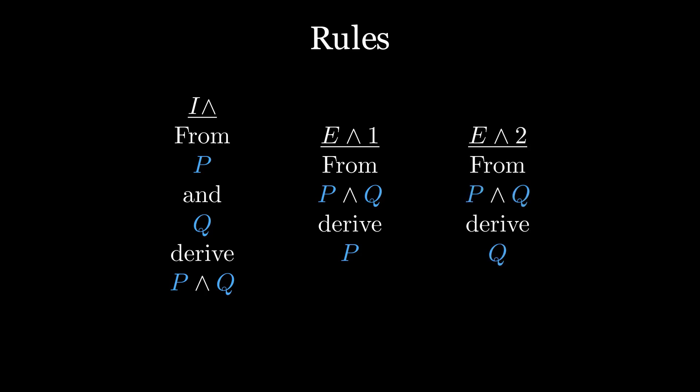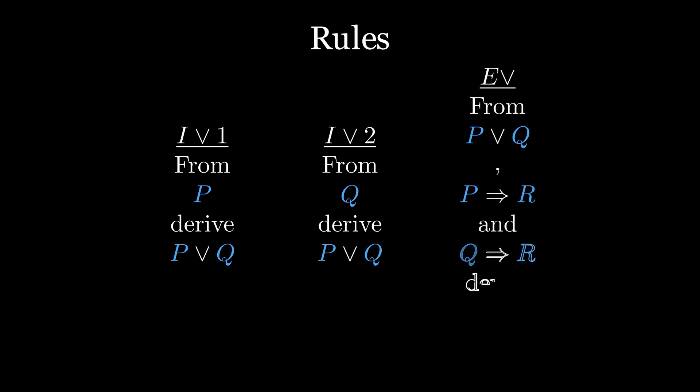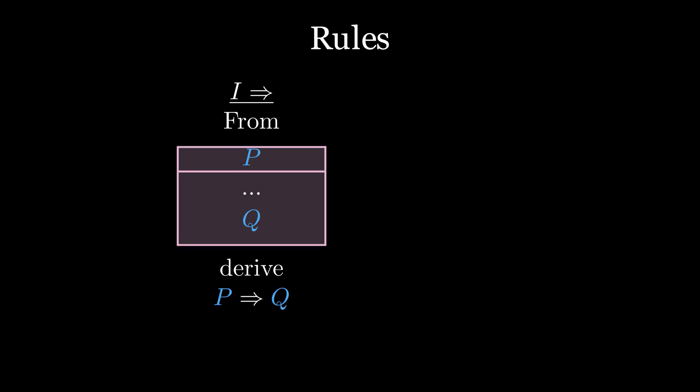We'll call the introduction rule for true, I true. We'll call the introduction rule for AND, I AND, the elimination rules for AND, E AND 1 and E AND 2, and so on. With I OR 1 and I OR 2 for the introduction rules for OR, E OR for the elimination rule for OR.